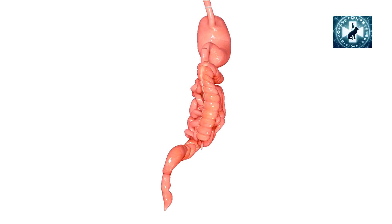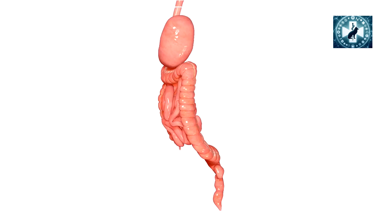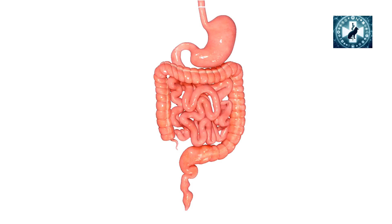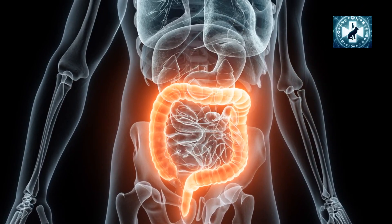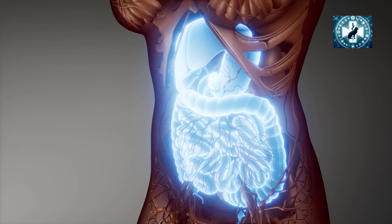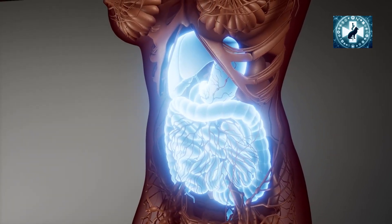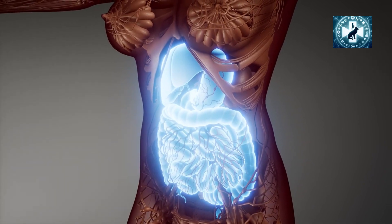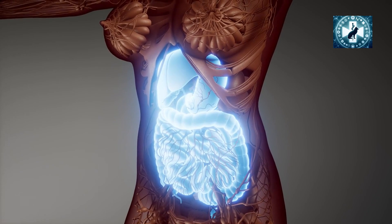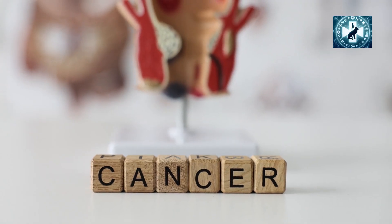The sections include the cecum, which is very close to the appendix and ileum — a small part of the small intestine that connects to the large intestine. The ascending colon is on the right side of the abdominal cavity. The transverse colon runs from right to left across the abdominal wall. The descending colon is on the left and stores feces. Below it is the sigmoid colon, which is S-shaped and connects to the rectum and anus. Cancer can occur in any or all of these parts.